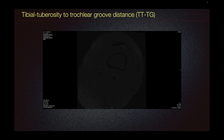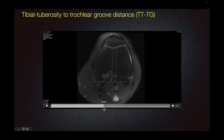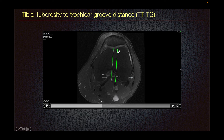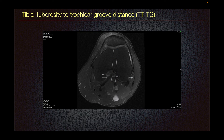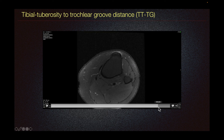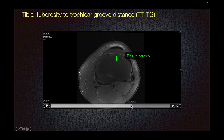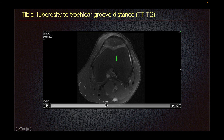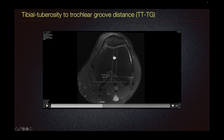The other thing we evaluate in patients with patellar dislocation or subluxation is the tibial tuberosity to trochlear groove distance. We do this by drawing a line along the posterior femoral condyle and a perpendicular line bisecting the trochlear groove. We then draw a perpendicular line bisecting the expected location of the tibial tuberosity, marking from the tibial tuberosity up to the level of the trochlear groove. From here, we measure the distance between these two parallel lines, which determines the tibial tuberosity to trochlear groove distance.